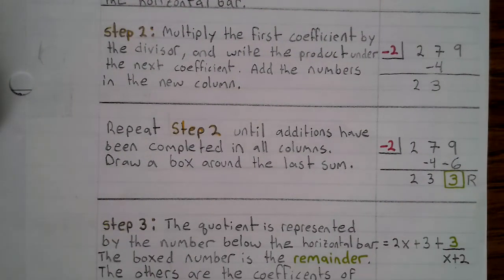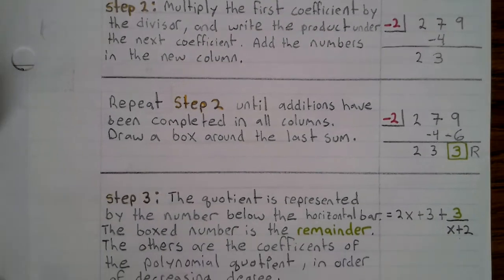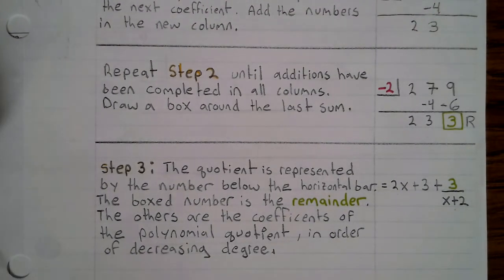Copy the first coefficient in the dividend below the horizontal bar. Step 2. Multiply the first coefficient by the divisor and write the product under the next coefficient. Add the numbers in the new column. Repeat step 2 until additions have been completed in all columns, draw a box around the last sum.